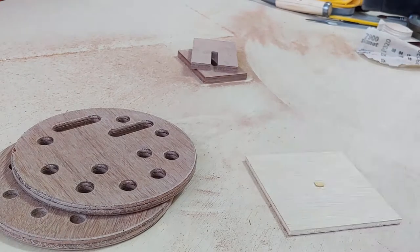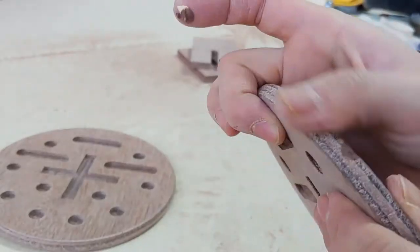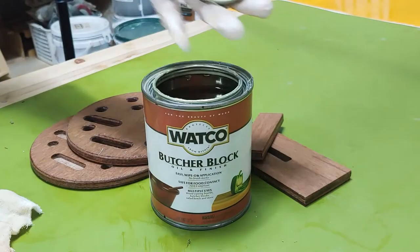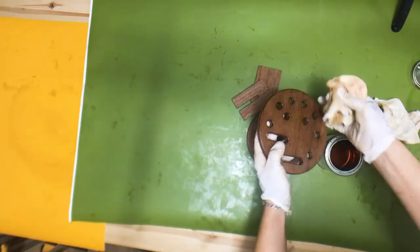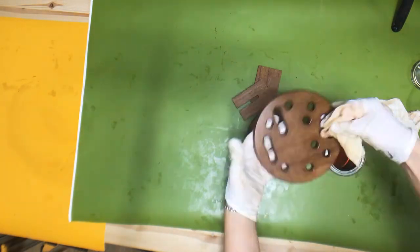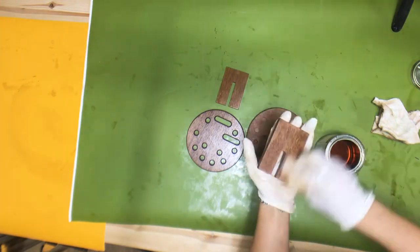I mixed two colors of wooden fillers and fill the broken edge. Otherwise, it might fall off. I needed a waterproof finish because I'm going to put wet brushes in the holder. Twice, I applied carefully.